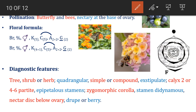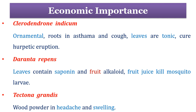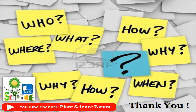The diagnostic characters for Family Verbenaceae are: habit may be tree, shrub, or herb; stem is generally quadrangular; leaves are simple or may be compound and exstipulate; calyx is 2 or 4 to 6 partite; stamens are epipetalous; corolla shape is zygomorphic; stamens are didynamous; a nectar disc is present below the ovary; and fruits may be drupe or berry. Some economically important members include Clerodendrum indicum, Duranta repens, and Tectona grandis. I hope you understood the topic. If you like the contents, please subscribe to the channel. Thank you.